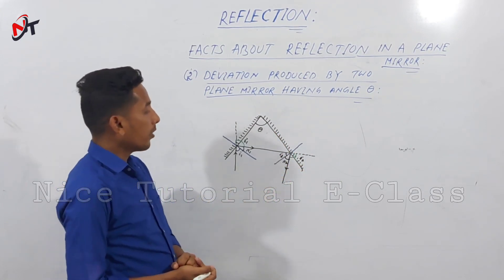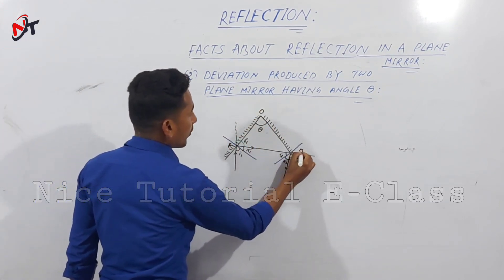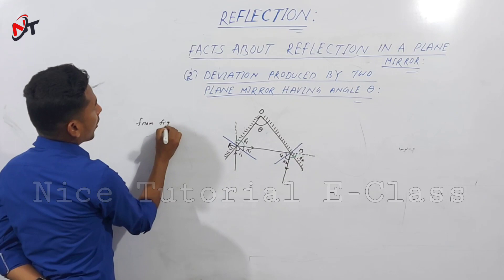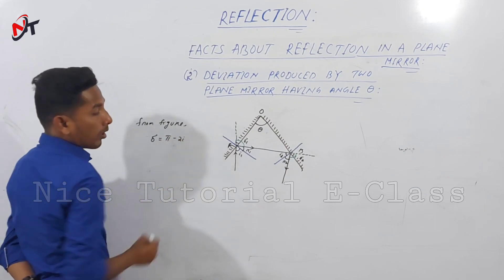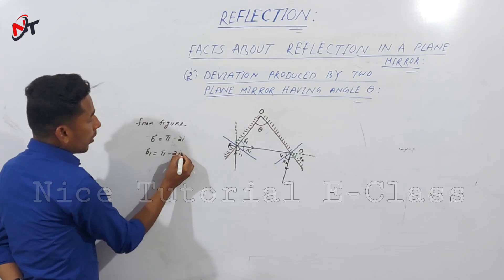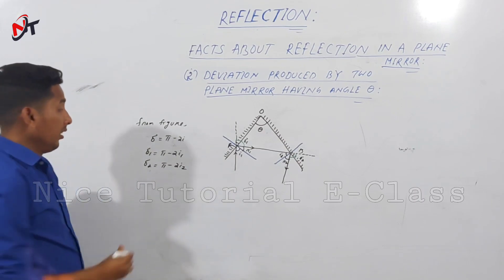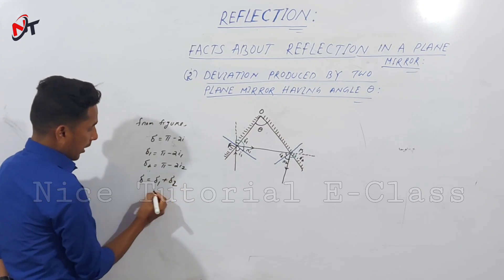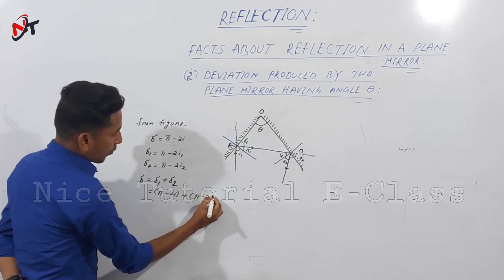From the figure, point O, A, and B are marked. Delta 1 equals pi minus 2i1. Similarly, delta 2 equals pi minus 2i2. Therefore, the total deviation delta equals delta 1 plus delta 2, which equals pi minus 2i1 plus pi minus 2i2, giving 2pi minus 2(i1 plus i2).